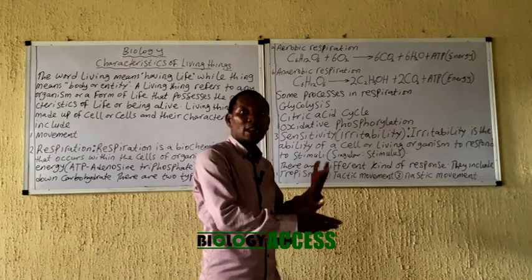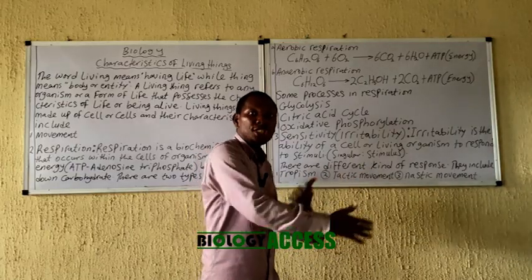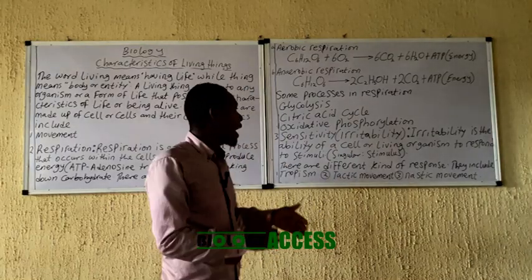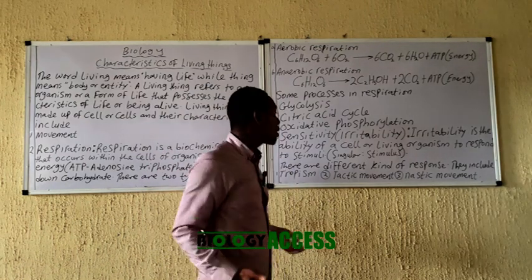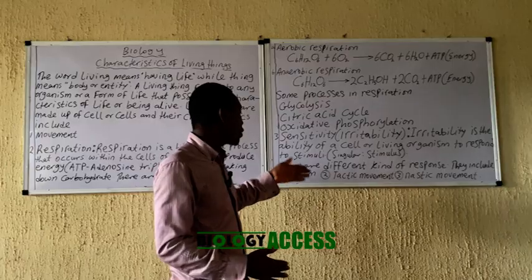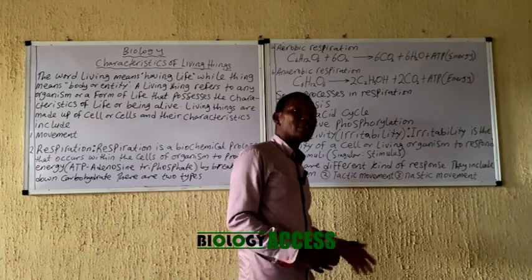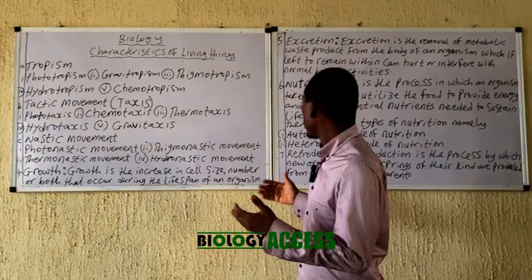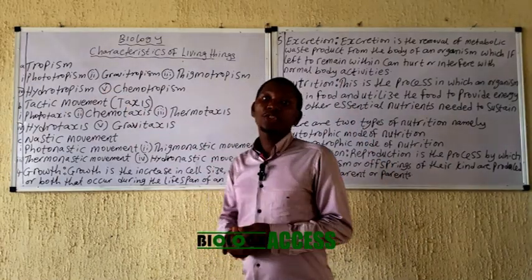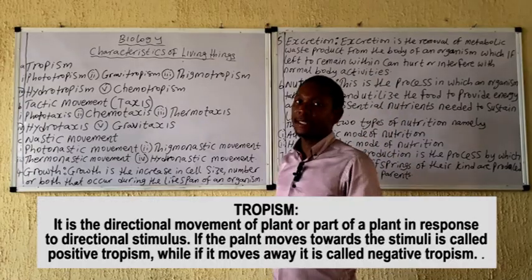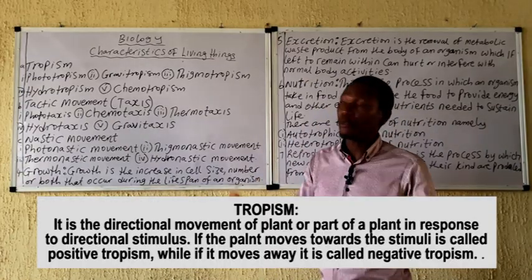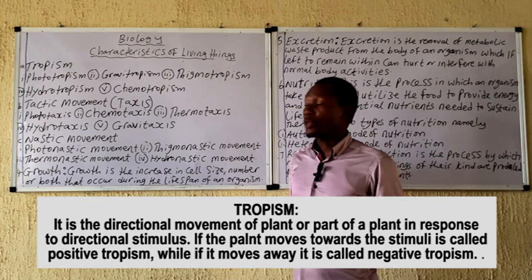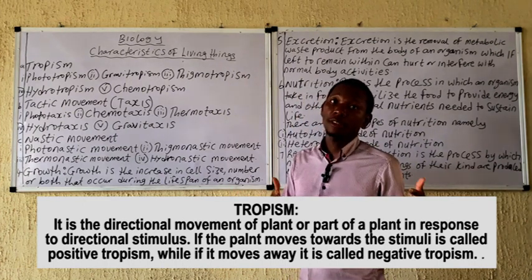A stimuli is a change in environmental condition, and your change in activity is regarded as a response. There are various kinds of responses in living organisms: we have tropism or tropic response, tactic movement or taxis, and nastic movement. Tropism is a directional movement of plants or plant parts in response to a directional stimuli. Tropism usually occurs more in plants. If the organism is moving towards the stimuli, it's called positive tropism; if moving away, it's called negative tropism.